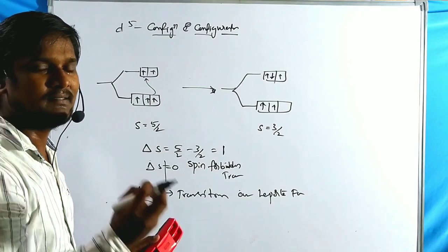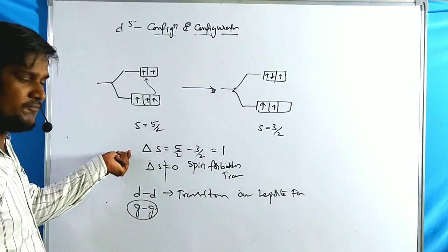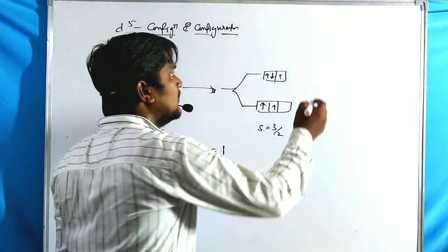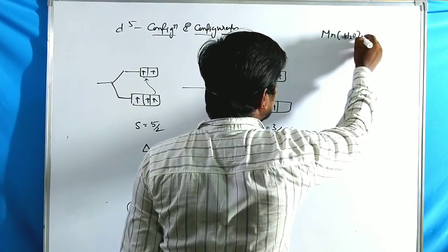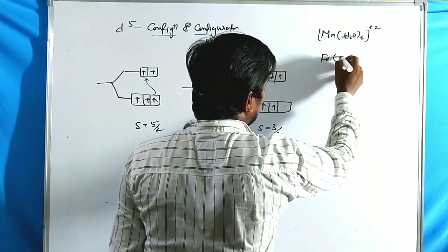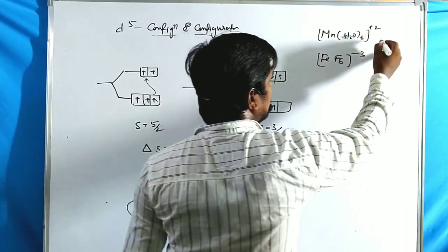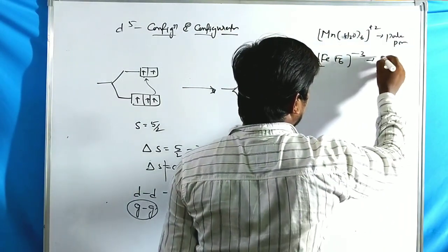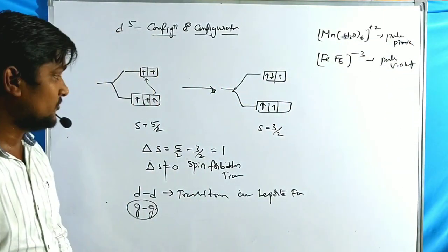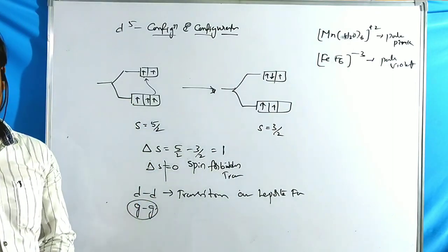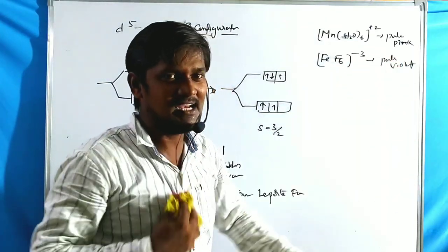Tetrahedral complexes have some p-d mixing, which is why they show a pale color. Examples: Mn(H₂O)₆²⁺ shows pale pink color and FeF₆³⁻ shows pale violet color. Even though both transitions are forbidden, these complexes still exhibit very light pale colors.